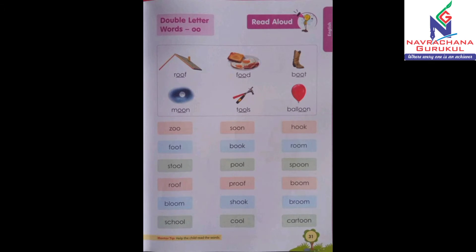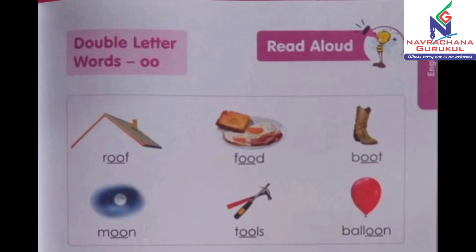Hello children, take out your book number 6, Primer B, page number 31. Today we are going to learn double letter words for the letter O — that is double O. So are you ready? Double O means the words that have double O in them. Okay students, here you have been given some words with pictures, so let's read out.